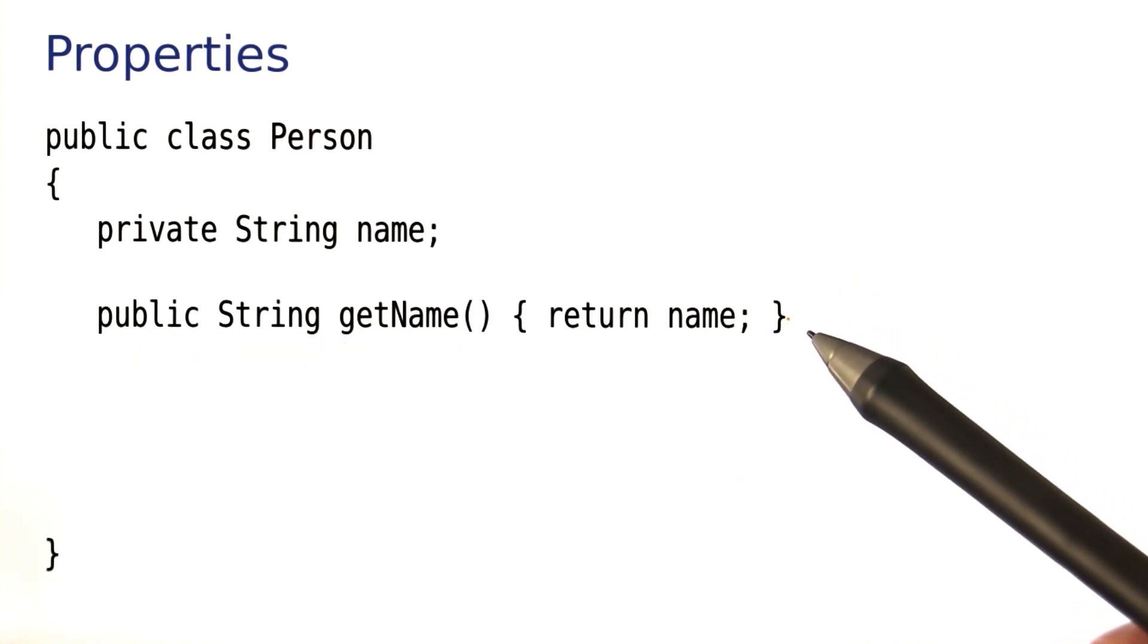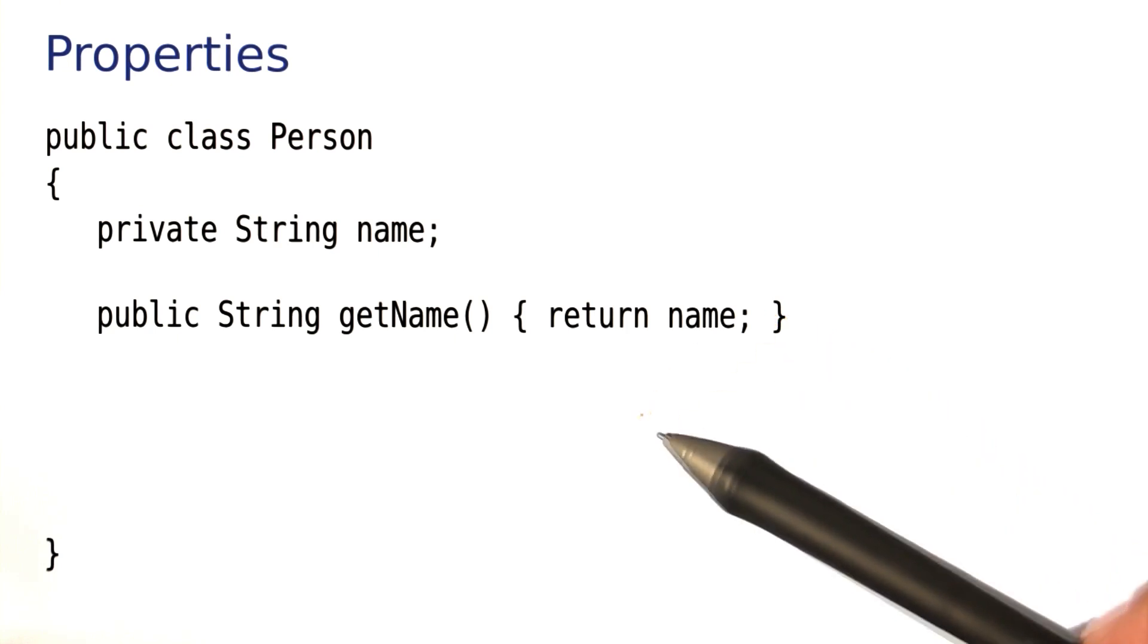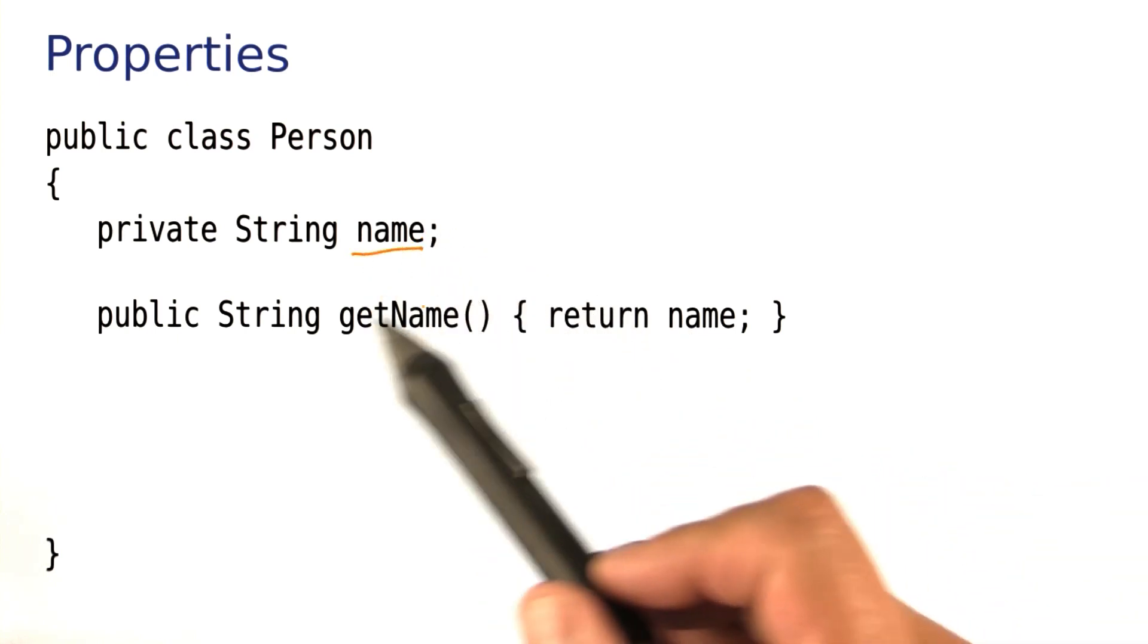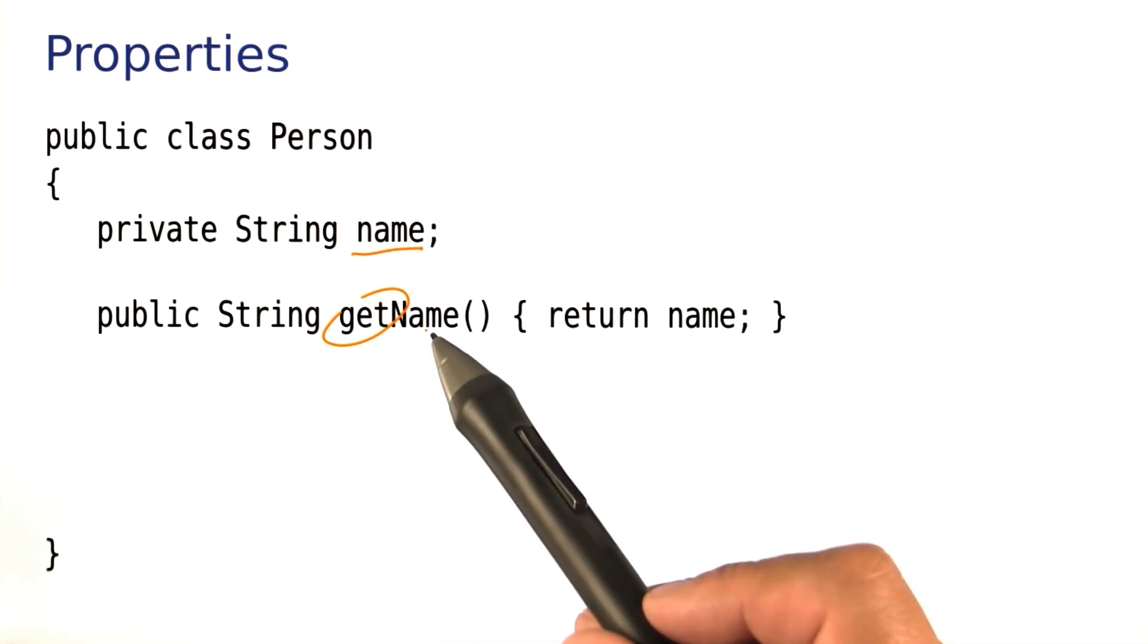Or maybe in a particular application it just shouldn't be allowed to change the name. And in that case there wouldn't be a setter. This is a read-only property in this example where we just have the instance variable and the corresponding getter.